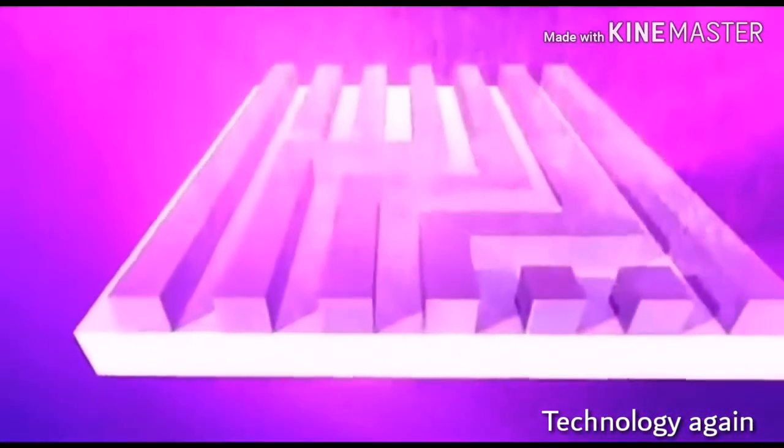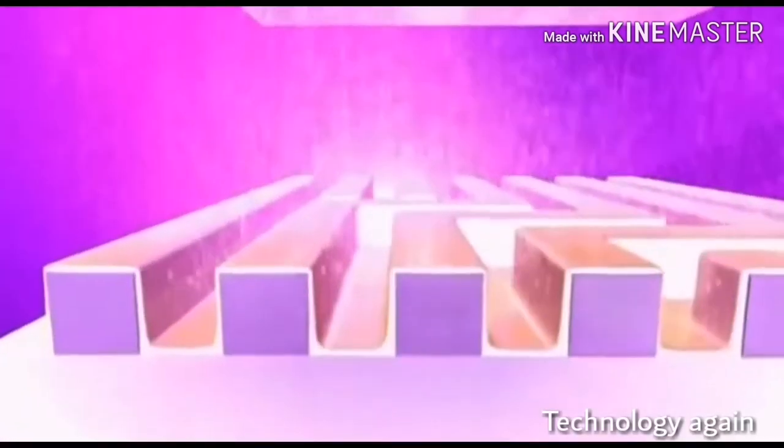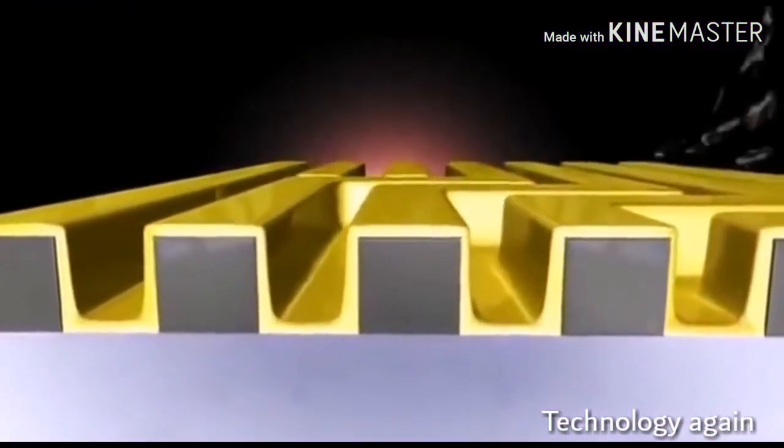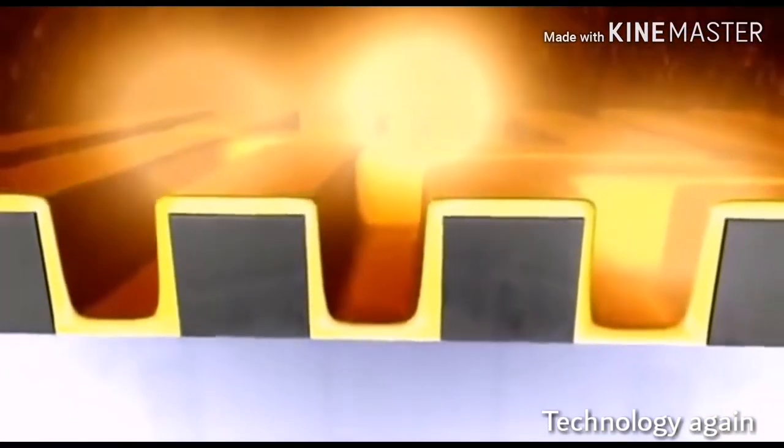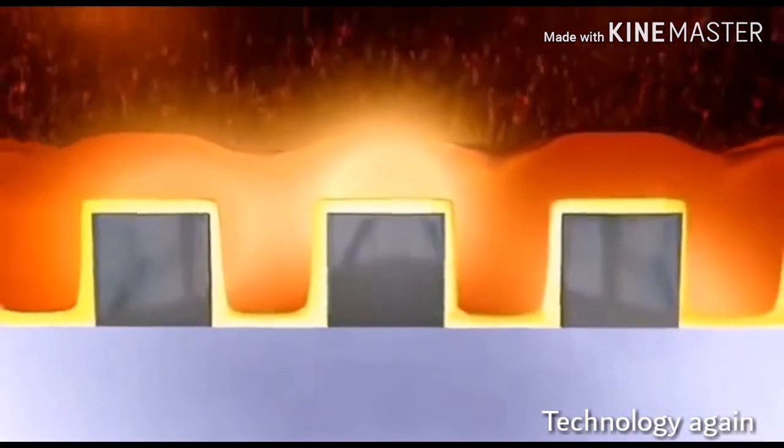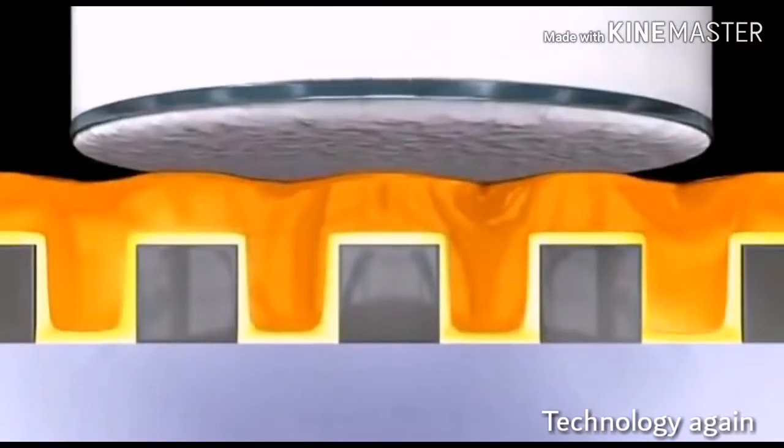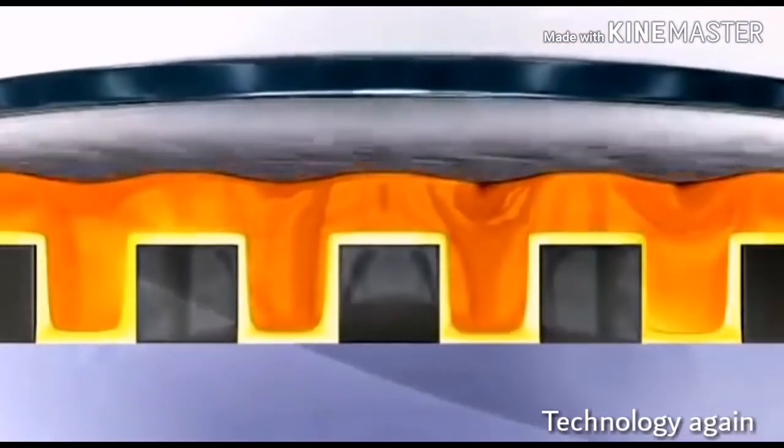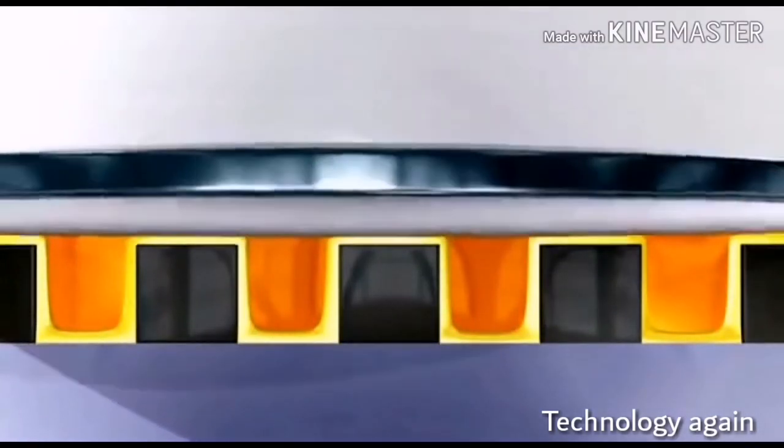Before the copper is poured into the trenches for the interconnects, a barrier layer is applied. It helps to avoid short circuits and guarantees reliability. The trenches are then filled with copper. Finally, the excess copper is ground down to the edges of the trenches. This insulates each interconnect from the others.